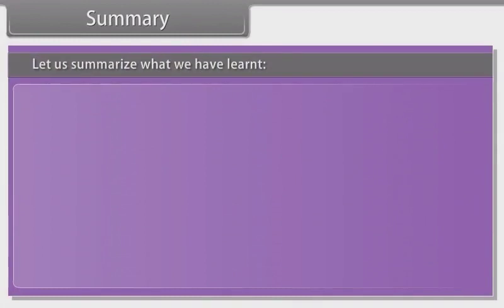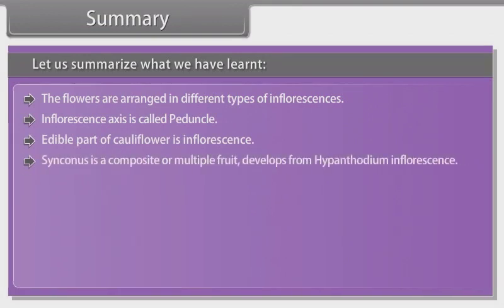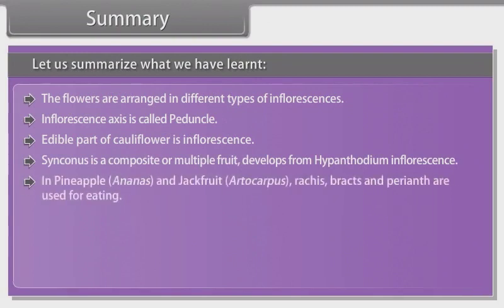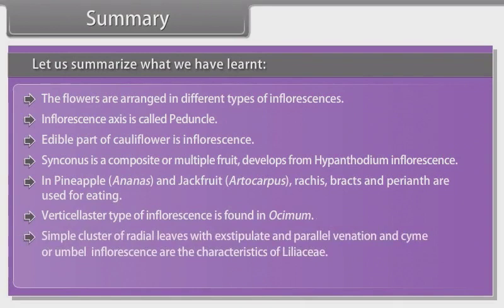Let us summarize what we have learned. The flowers are arranged in different types of inflorescences. The inflorescence axis is called the peduncle. The edible part of cauliflower is the inflorescence. Syncarpy is a composite multiple fruit that develops from hypanthodium inflorescence. In pineapple (Ananas) and jackfruit (Artocarpus), the rachis, bracts, and perianth are used for eating. Verticillaster type of inflorescence is found in Ocimum. Simple cluster of radical leaves with exstipulate and parallel venation and cyme or umbel inflorescence are characteristics of Liliaceae.